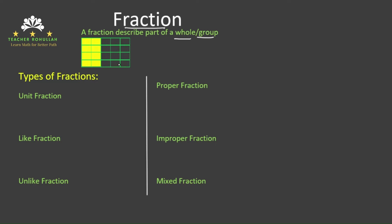For example, in the rectangle over here, we have 20 small squares. Out of 20 small squares, eight of them are shaded. To write the fraction of the shaded part, we will write 8 over 20. And we can read it as 8 twentieths.